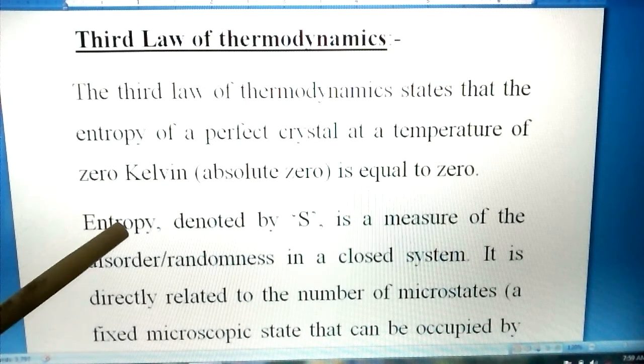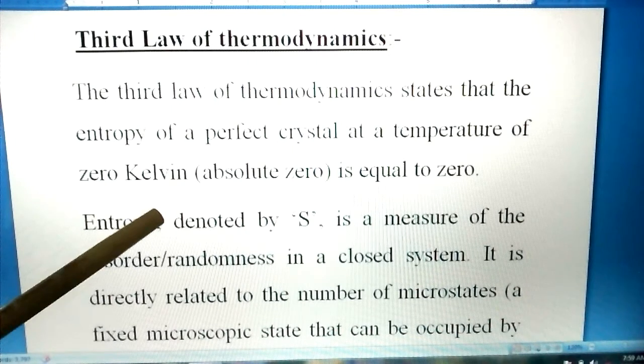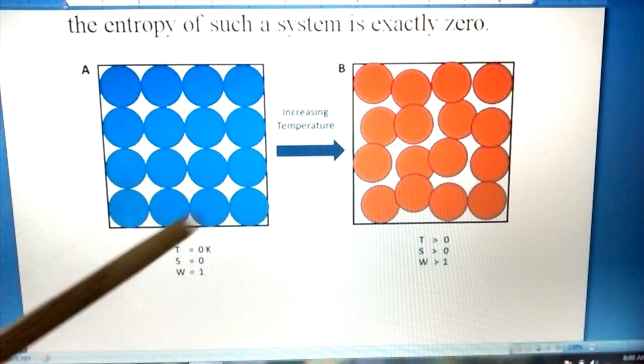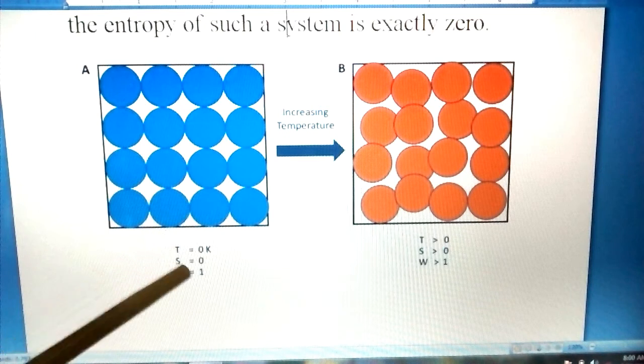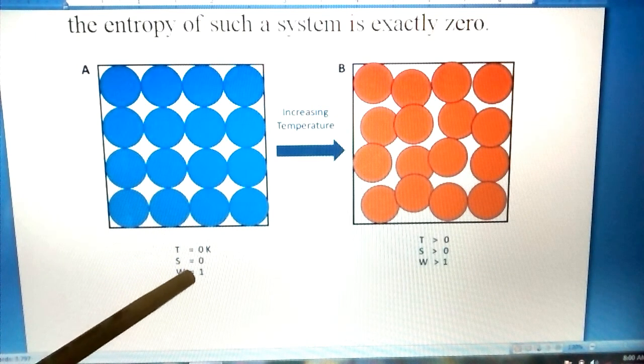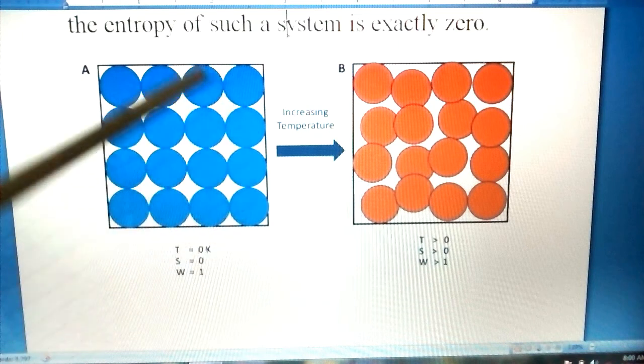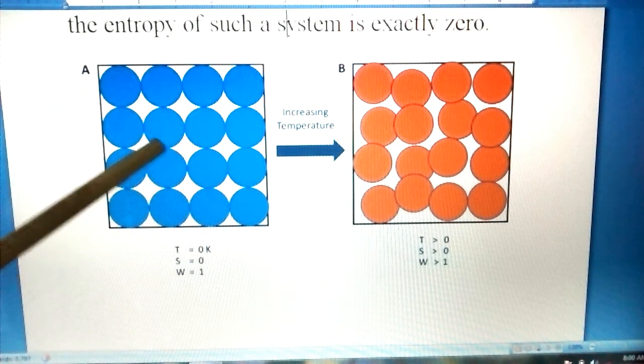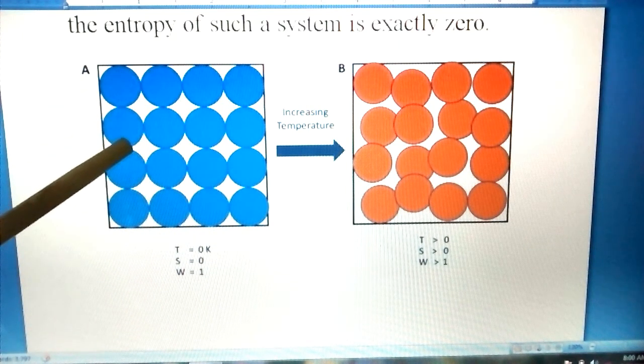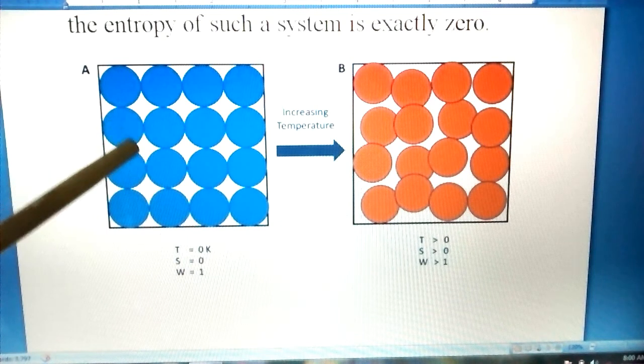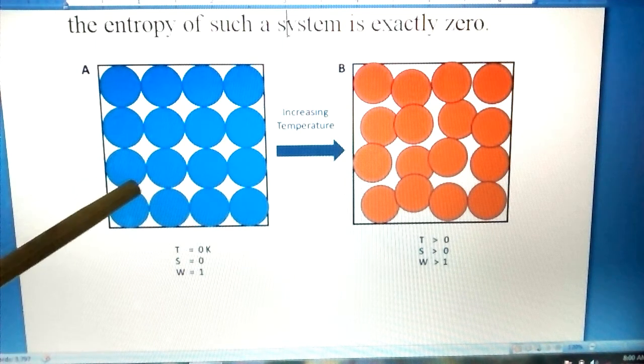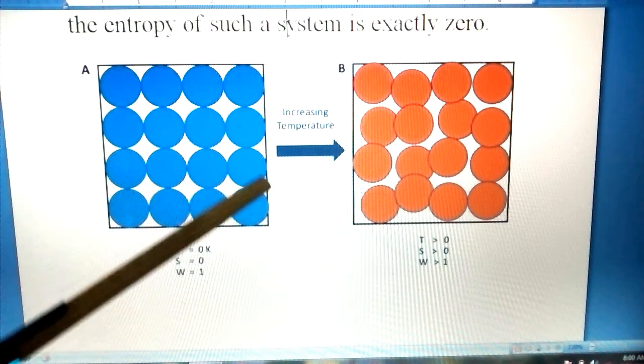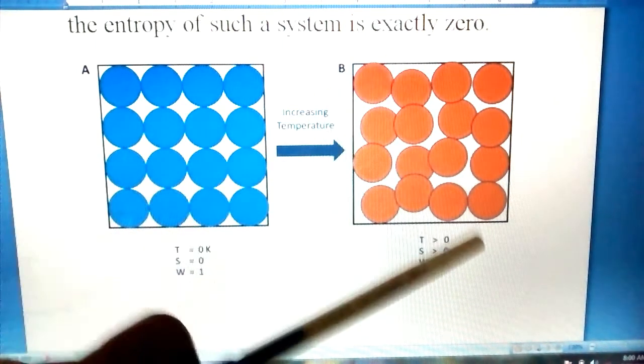This is the third law of thermodynamics. You can see here it is a crystal, and the degree of randomness is zero. We can say that there is no heat. As we start to heat, then the temperature will rise and particles will start to move.